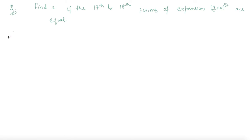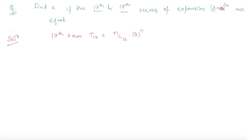We are given a question in which we have to find out the value of A, where the 17th and 18th terms of (2 + A) raised to the power 50 are equal. To find the 17th term, T17, I use the formula: 50C16 · 2 raised to the power 34 · A raised to the power 16. And T18 is 50C17 · 2 raised to the power 33 · A raised to the power 17.